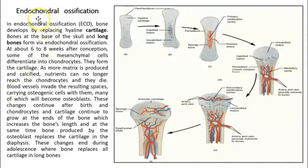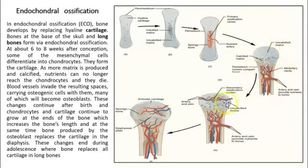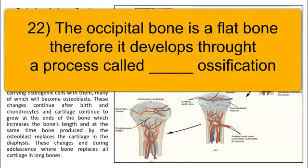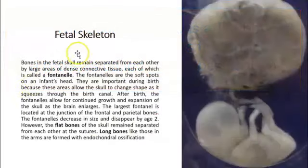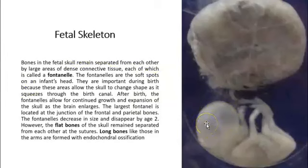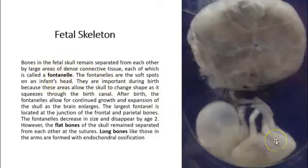Endochondral ossification is used for long bones. It starts with a cartilage template that is present at birth. The cartilage — shown as the epiphyseal plate — helps the bone grow in length and will eventually turn into bone, at which point we stop growing. In the fetal skeleton, cranial flat bones originate from intramembranous ossification, while long bones start via endochondral ossification.